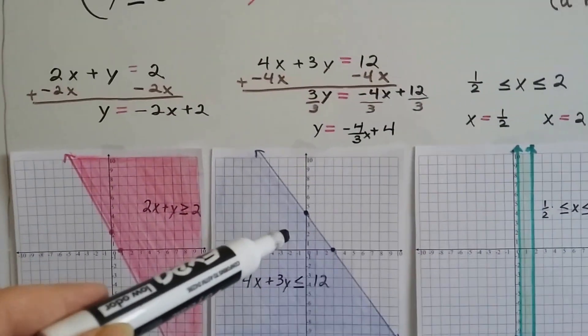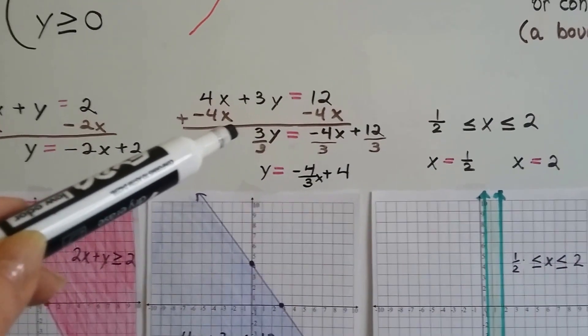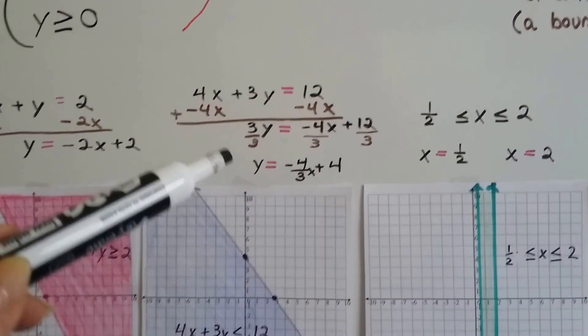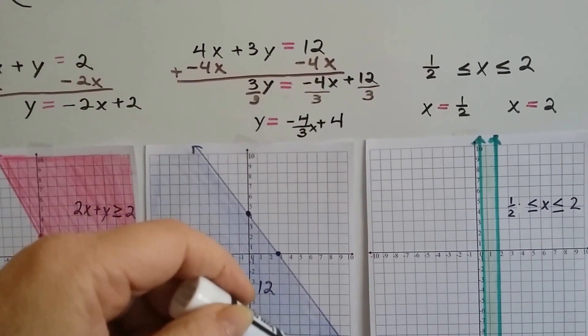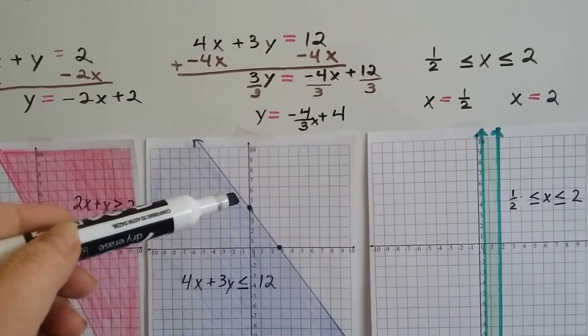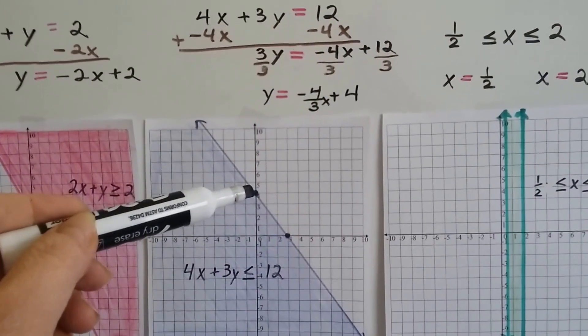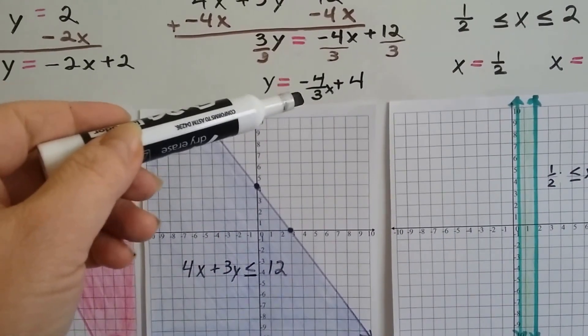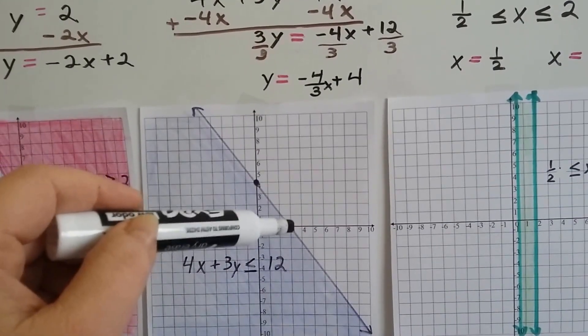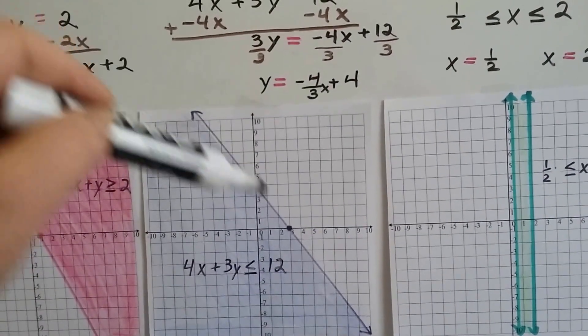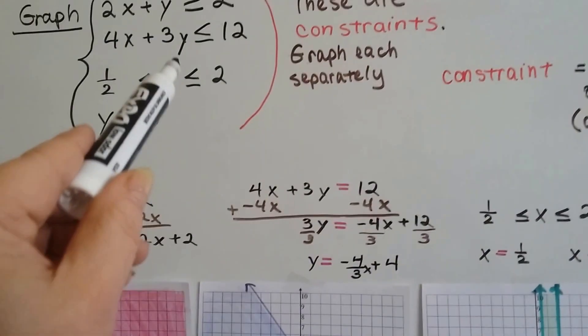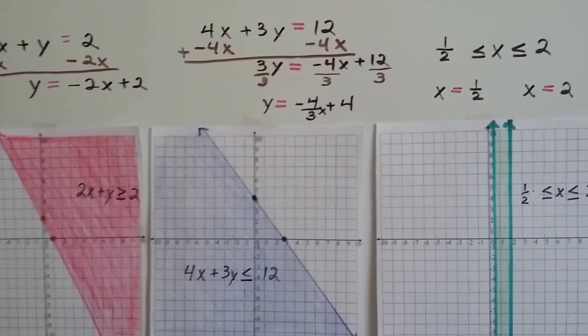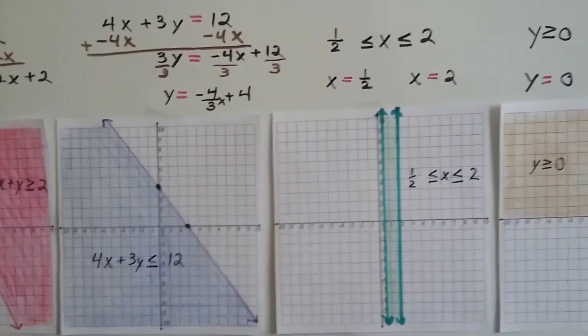We do the same thing with the blue one. We put it into slope-intercept form, and we get y equals a negative 4 thirds x plus 4. It's a negative slope, so it's going to fall to the right. We know it hits the y-axis at 4 right here. And our slope is negative 4 over 3. So we're going to go down 4 and over 3. Put our point there, and draw a solid line because it does equal it. It's less than or equal, so it's a solid line.